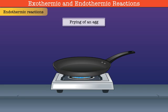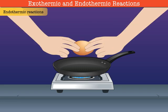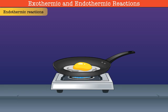It's time to look at some endothermic reactions now. As you know, these reactions absorb heat energy. Look at how an egg is fried on a pan. When we break an egg on a heated pan, heat is absorbed by the egg and the liquid parts turn solid.